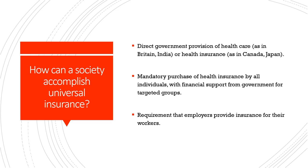How can a society accomplish universal insurance? There are tried and tested methods: direct government provision of healthcare or health insurance; mandatory purchase of health insurance by all individuals with financial support from government for targeted groups — for example, Ayushman Bharat in India; and requirements that employers provide insurance for their workers through workplace health insurance programs.